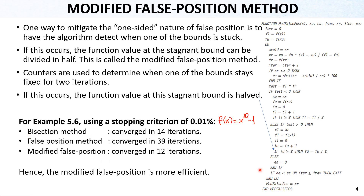The modified false position can eliminate the slow convergence issue of the false position and is now better than bisection as well, though they are about the same. The modified false position is the most efficient compared to false position and bisection. Bisection is second in this example, and false position is third. But for other examples, false position can still be quicker than bisection.